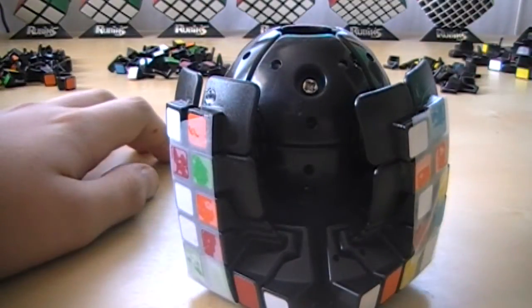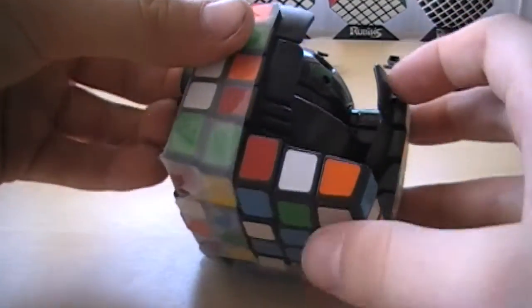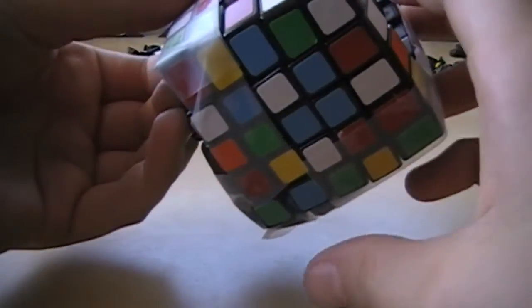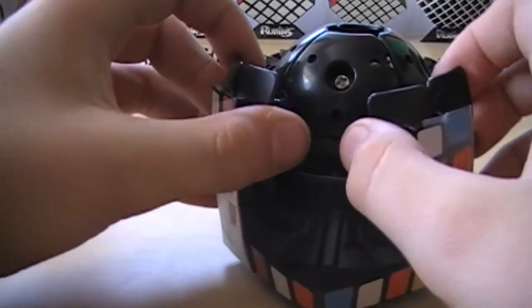And then, the corners. Remember, we are going to be putting these all in solved together. So, like, white. And then, white will be facing here, here, here. And orange will be here, here, here, here. And so, yeah.